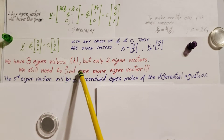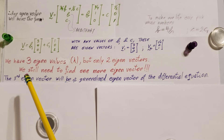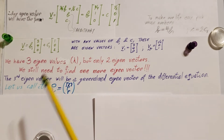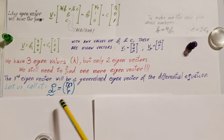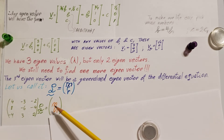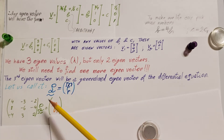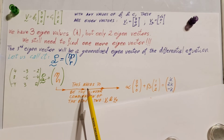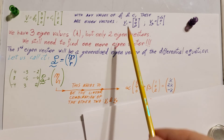This means that we still need to find one more eigenvector. The third eigenvector will be a generalized eigenvector of this differential equation that we are working with, and I'm going to call it Q, with components M, P, and R. To find its actual values, let's write up our matrix times the eigenvector equal to eta1 — a vector we don't really know at this point, and this will be the tricky part. This eta1 needs to be a linear combination of the other two eigenvectors V1 and V2.